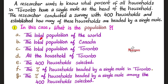Is it A, the total population of the world; B, the total population of Canada; C, the total population of Toronto; D, all the households of Toronto; E, the 400 households selected; F, the percentage of households headed by a single male in Toronto; or G, the percentage of households headed by a single male among the 400 households selected?